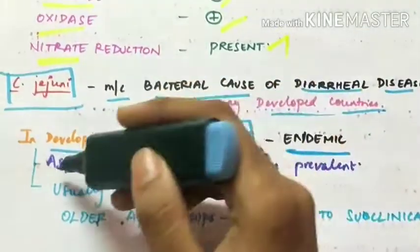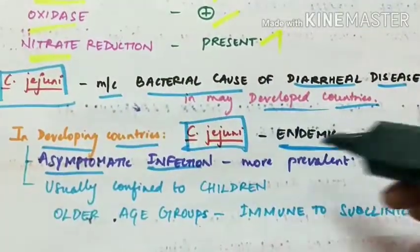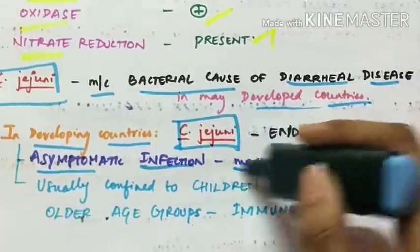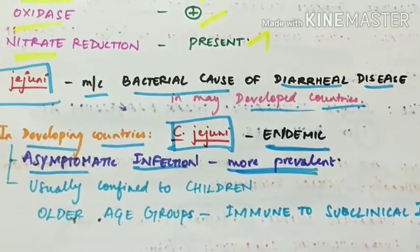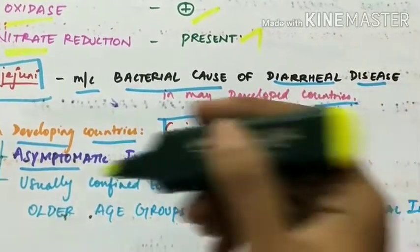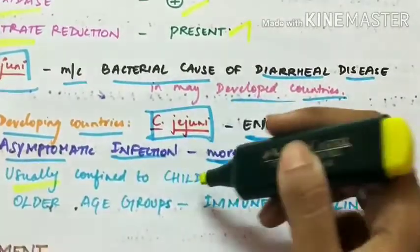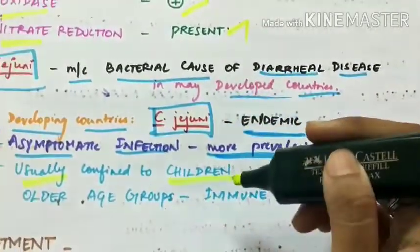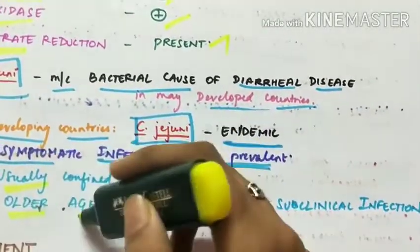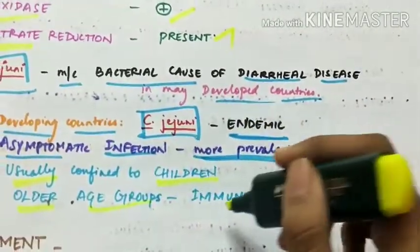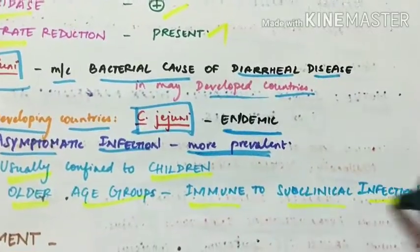In developing countries, asymptomatic infection is more prevalent. Campylobacter jejuni infection is usually confined to children, because older age groups develop immunity to subclinical infection.